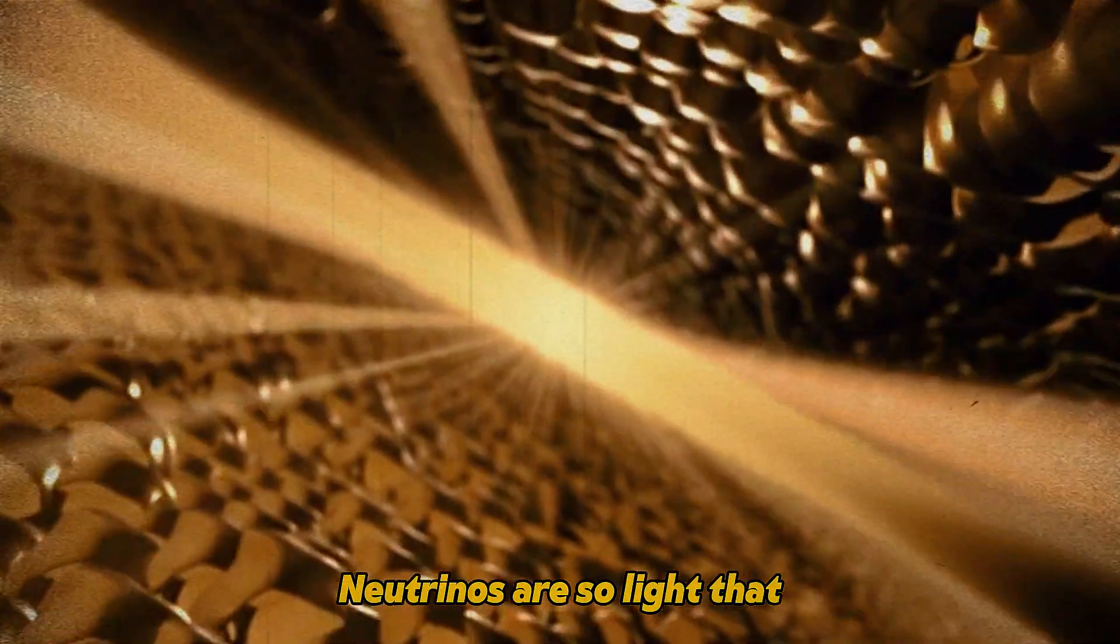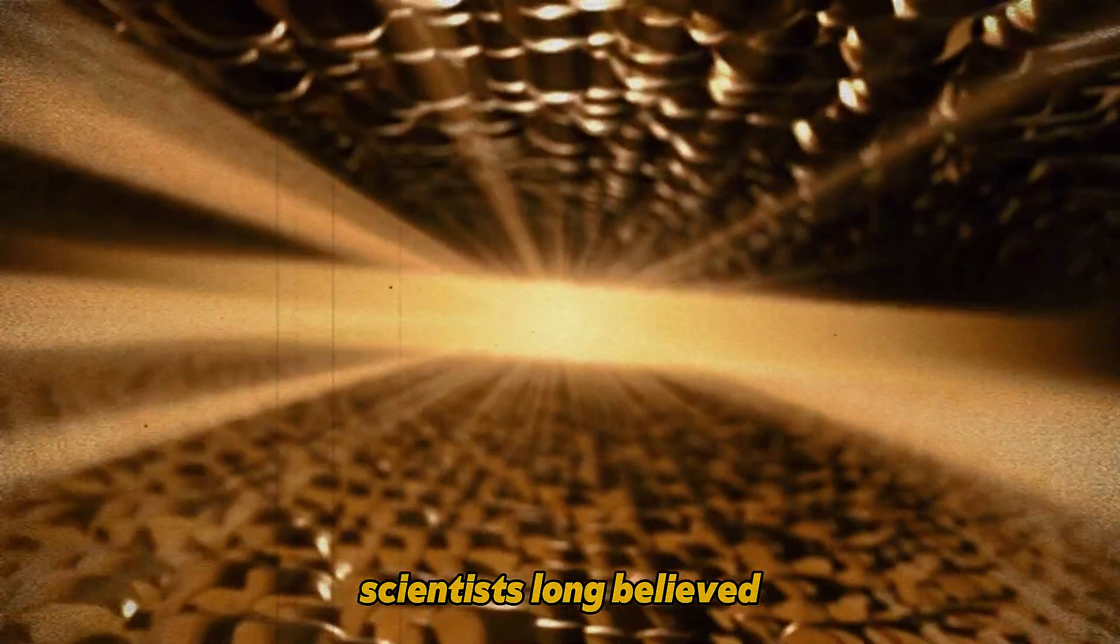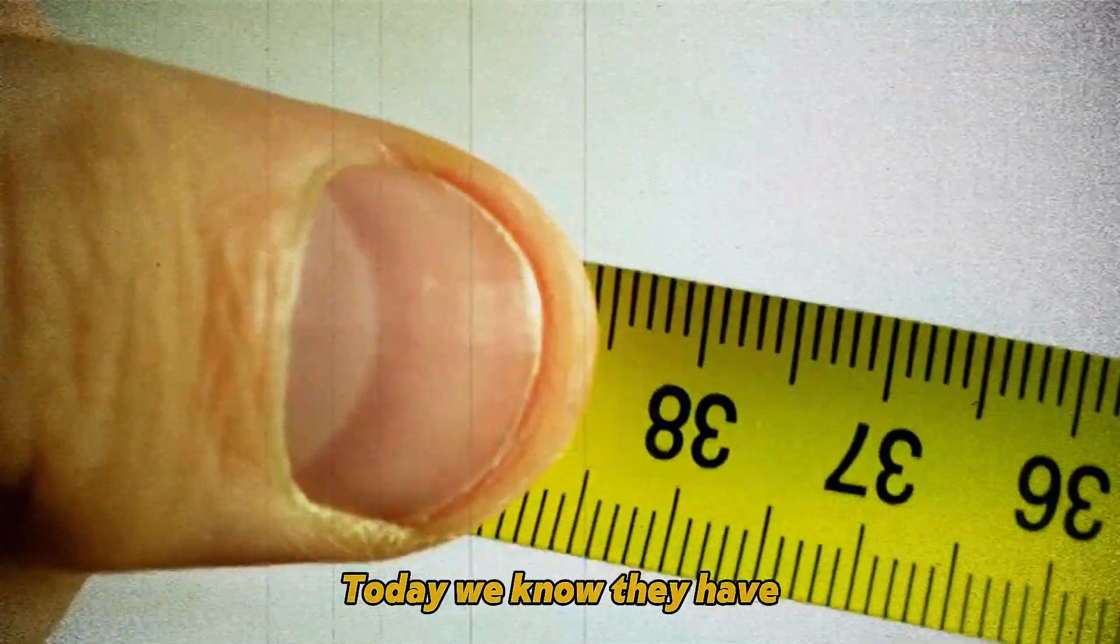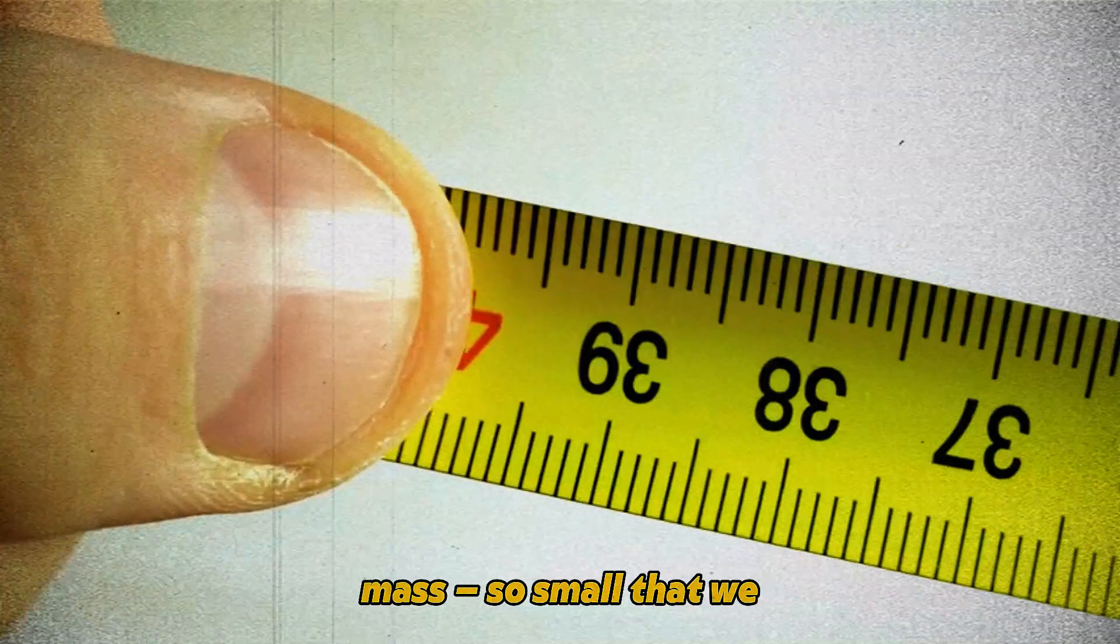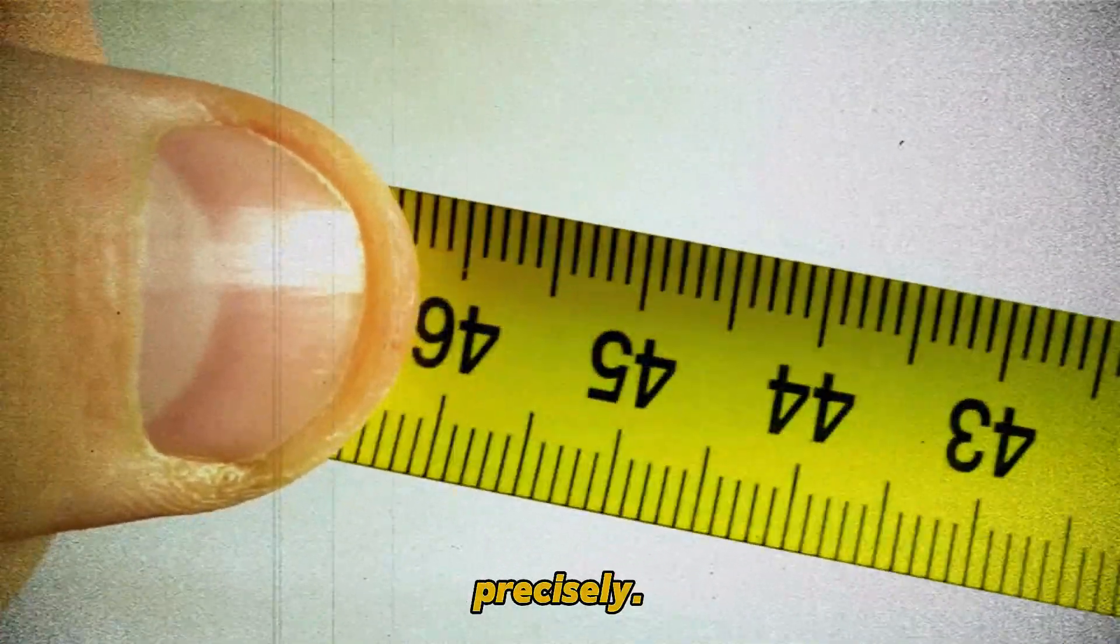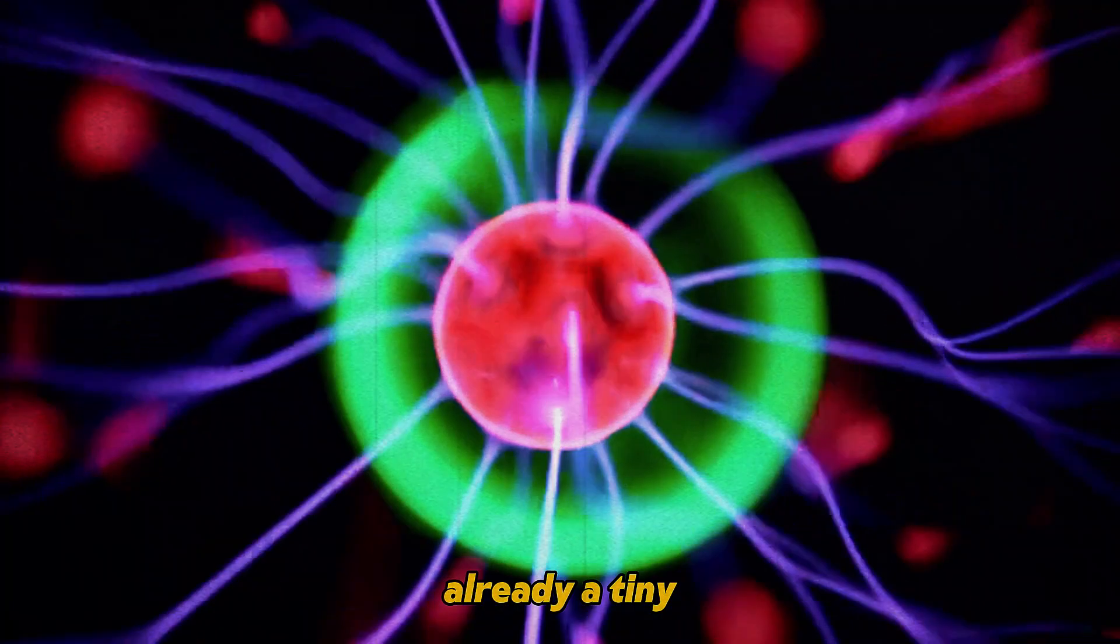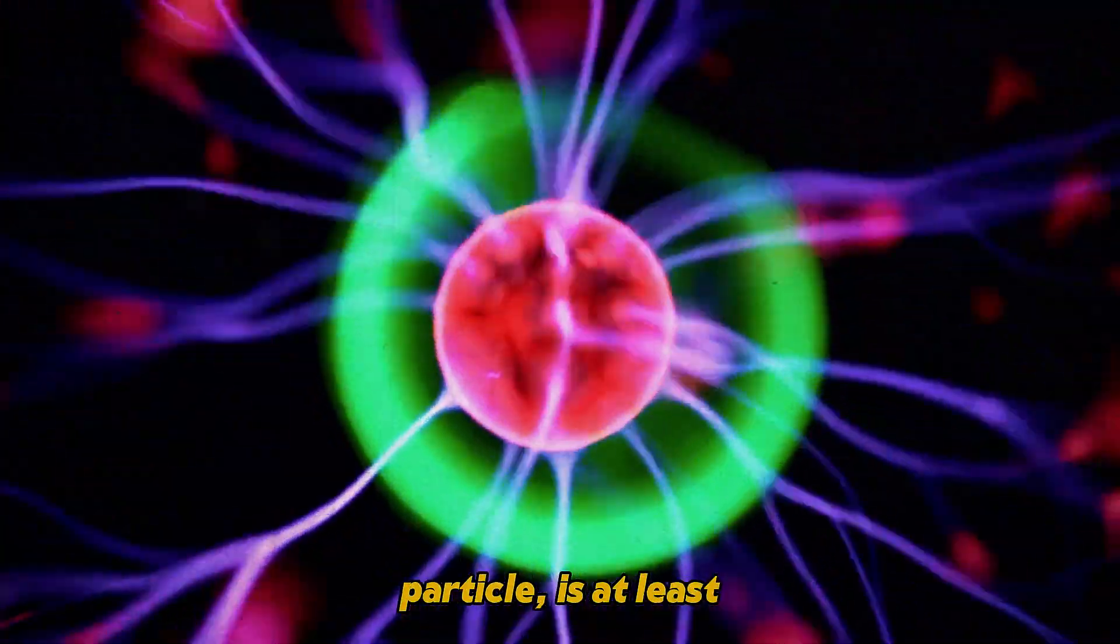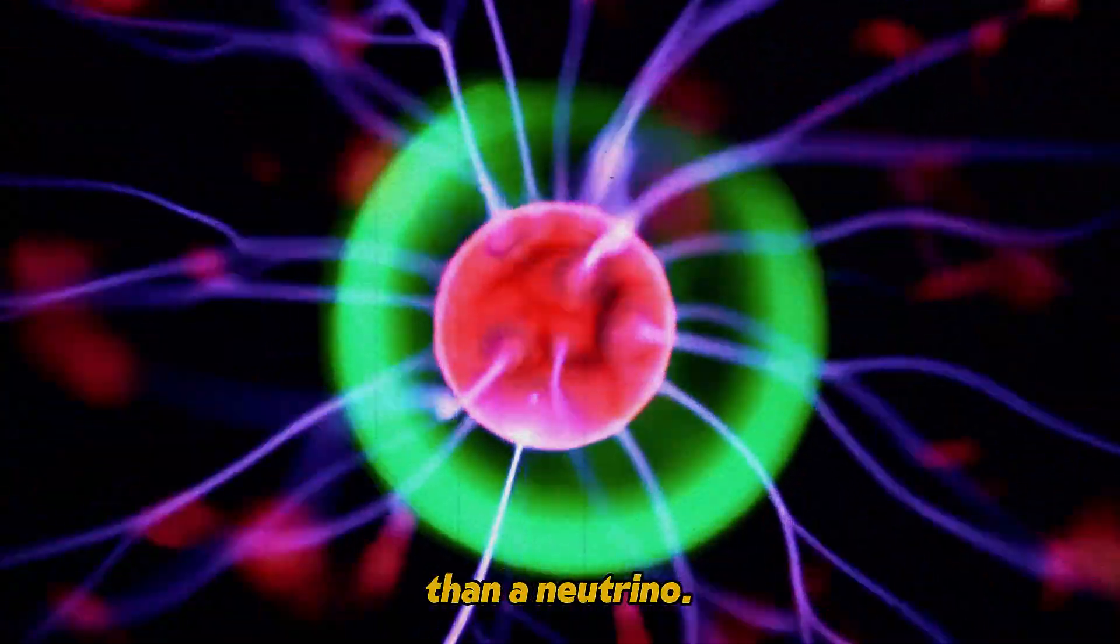Neutrinos are so light that scientists long believed they had no mass at all. Today we know they have an incredibly small mass, so small that we still can't measure it precisely. An electron, which is already a tiny particle, is at least 500,000 times heavier than a neutrino.